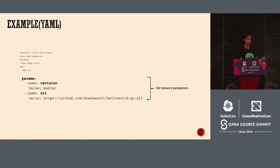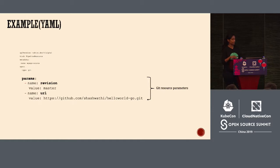The parameters are going to change depending on what resource you're talking about. For example, in the context of a Docker image, this is going to be an image digest, and this is going to be a URL which corresponds to where the registry in which the Docker image is hosted.